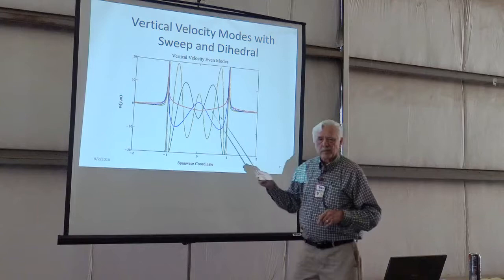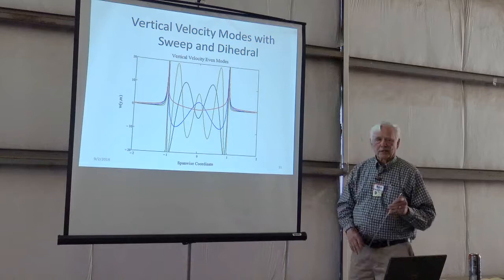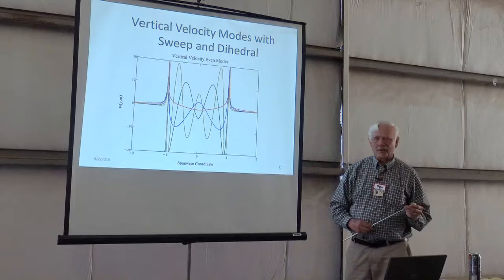This is the same calculation, but now I put sweep and dihedral in it. And the modes change all over the place. But okay, I can do the modes, now how do I add them up? And that is kind of work in progress, so.